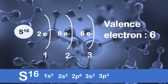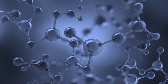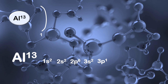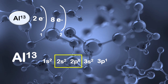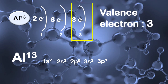Therefore, the valence electron for sulfur is 6. Let us have another example. Aluminum with atomic number 13. The SPDF notation for aluminum is 1s2, 2s2, 2p6, 3s2, and 3p1. For the half-shell notation: first shell has 2 electrons, second shell has 8 electrons because 2 plus 6 is 8, and the third shell has 3 electrons because 2 plus 1 is 3. The valence electron for aluminum is 3.